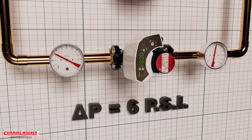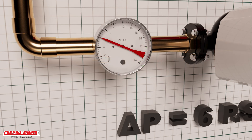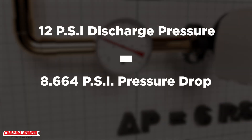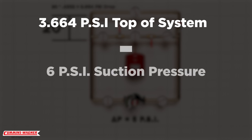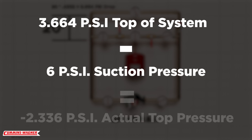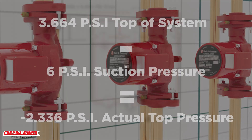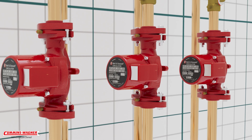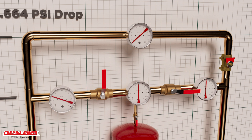Remember, the circulator will create a pressure differential. If it cannot boost the outlet or discharge pressure, it will reduce the suction pressure. Now instead of having 12 psi on the suction of the circulator, we have 6 psi. Discharge pressure at 12 psi minus 8 psi drop to get to the top of the system equals less than 4 psi at the top. With 6 psi suction pressure, we could have a minus 2 psi gauge at the top of the system. Circulators require static pressure to operate and will not flow water at zero pressure, so this is a real problem.